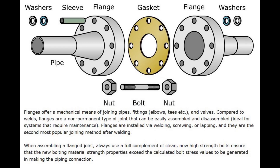Flanges offer a mechanical means of joining pipes, fittings, elbows, tees, etc., and valves. Compared to welds, flanges are a non-permanent type of joint that can be easily assembled and disassembled, ideal for systems that require maintenance. Flanges are installed via welding, screwing, or lapping, and they are the second most popular joining method after welding.